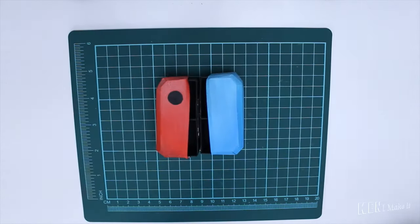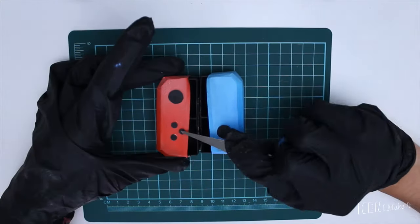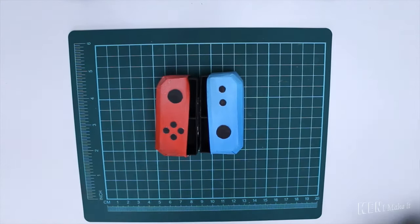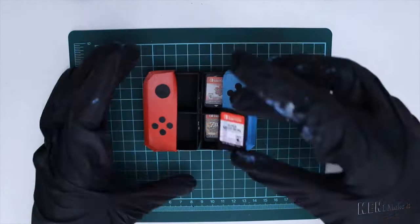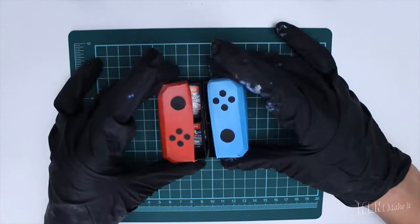Now for the final details I am just going to glue a bunch of black circles to mimic the buttons on the controller. Now that looks like the Joy-Cons. And finally, let's put the games in.